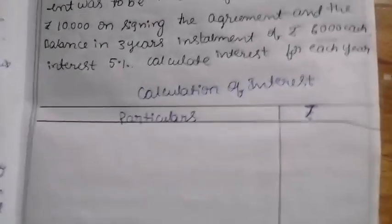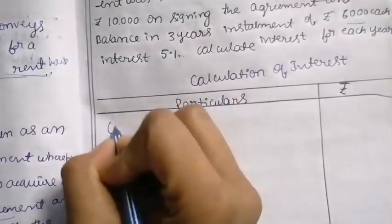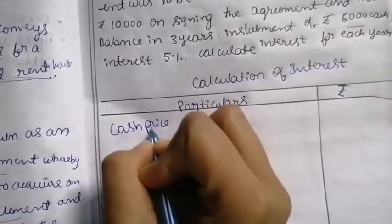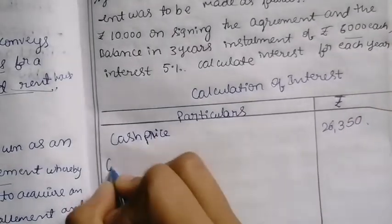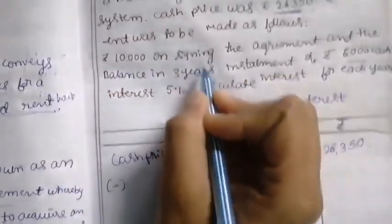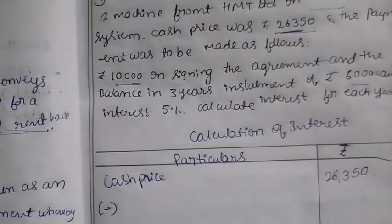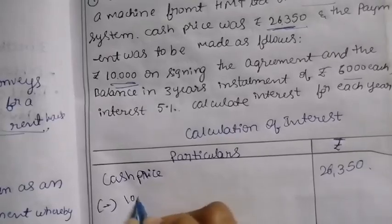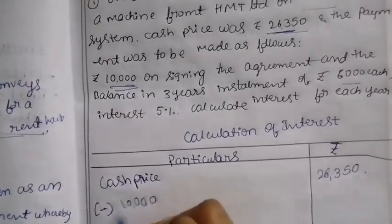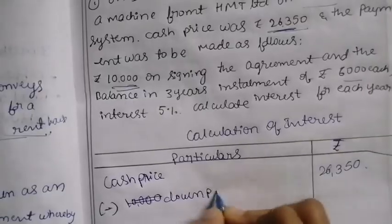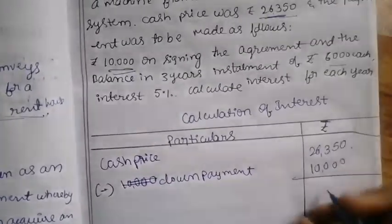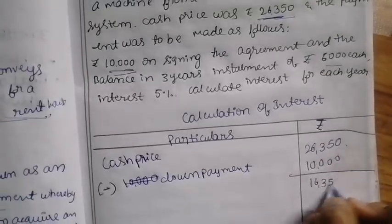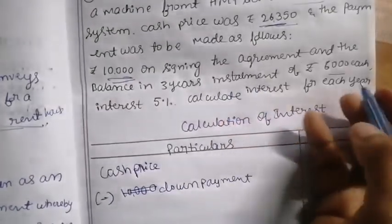This is the format for calculation of interest. First, we take the cash price — the original cost is 26,350. Next, the down payment: on signing the agreement, 10,000 is paid. So we write 10,000 and subtract it: 26,350 minus 10,000 gives us 16,350. This 16,350 is the balance amount.